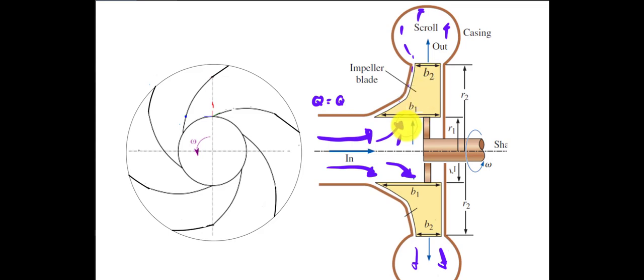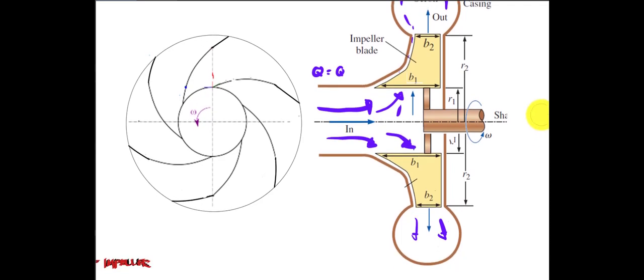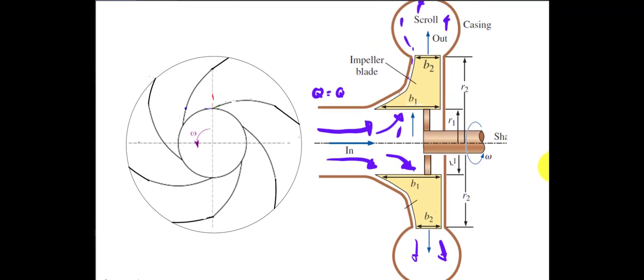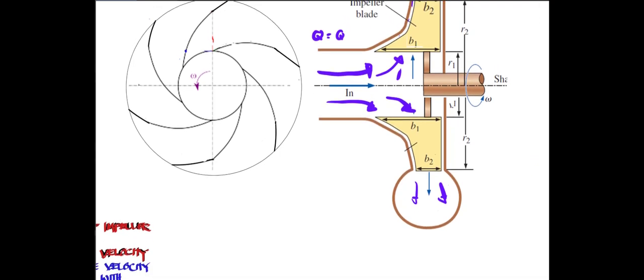By conservation of mass, the same volume flow rate must pass through the circumferential cross-section defined by width b2 at radius r2. Using the continuity equation, what is entering the system is also the same volume flow rate leaving the system. The volume flow rate Q equals area times velocity.